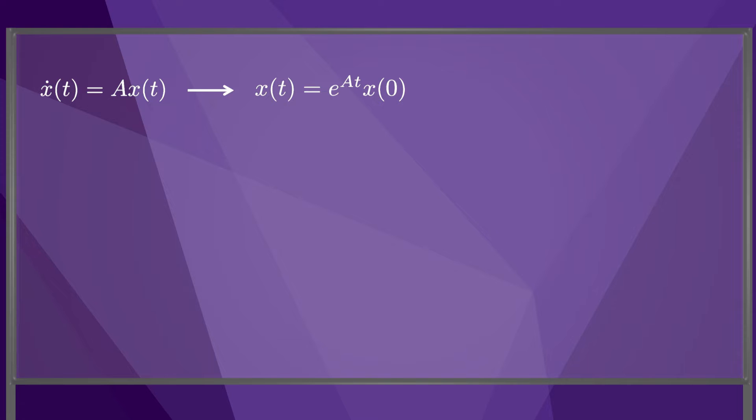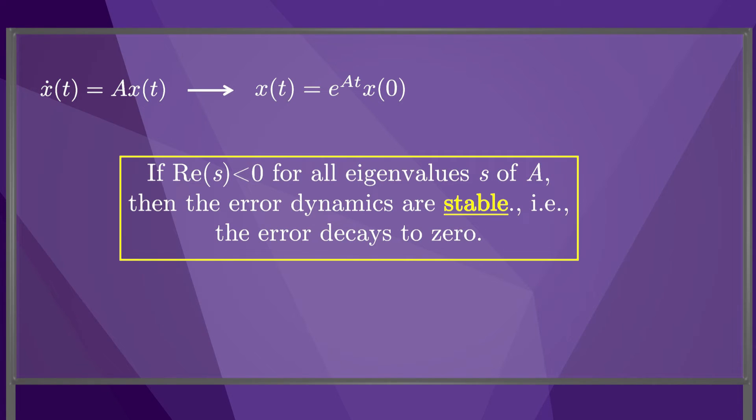The generalization of this observation to the case where x is a vector and A is a matrix, whose eigenvalues are complex numbers in the general case, is that the error is only guaranteed to decay to zero if the real components of all the eigenvalues are negative. In other words, if the real components of all the eigenvalues of the matrix A are negative, then the error dynamics are stable.